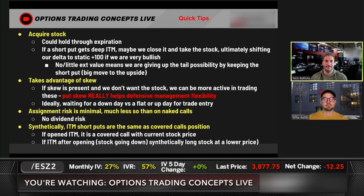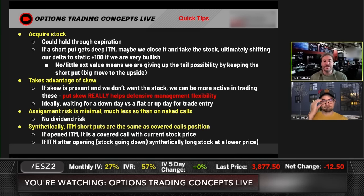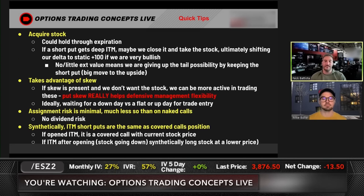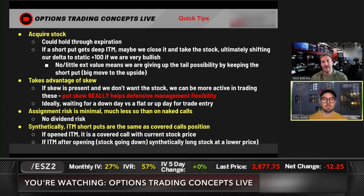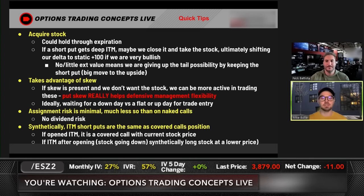Taking advantage of skew: if put skew is present and you don't want to just straight-up buy the stock, you can use puts to play into that skew. Put skew really helps with defensive management flexibility because you're getting paid to take the downside risk. Something like SPY, QQQ, or Apple typically has put skew. You might see call skew in something like Tesla or a lower-priced stock that already has a floor built in at zero.